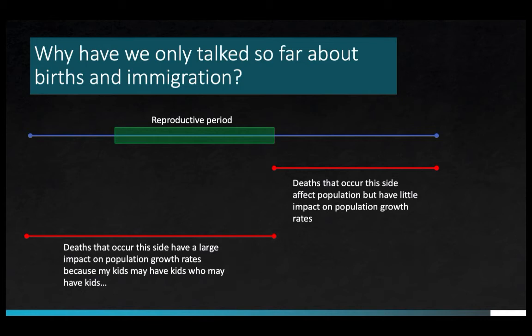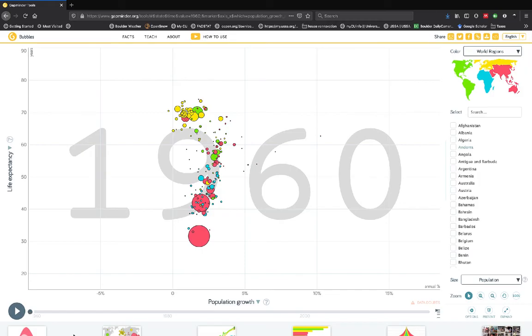If you look at the left side of the line and imagine decisions made earlier in life, you can see how this affects future population growth. If someone chooses to have one child or five children, those kids will go on to potentially have their own children, who will then have their own children, and these decisions about family size will ripple out for decades. So for overall population growth rates, the number of children born to an average woman in her lifetime — called the total fertility rate — matters more than perhaps any other statistic.